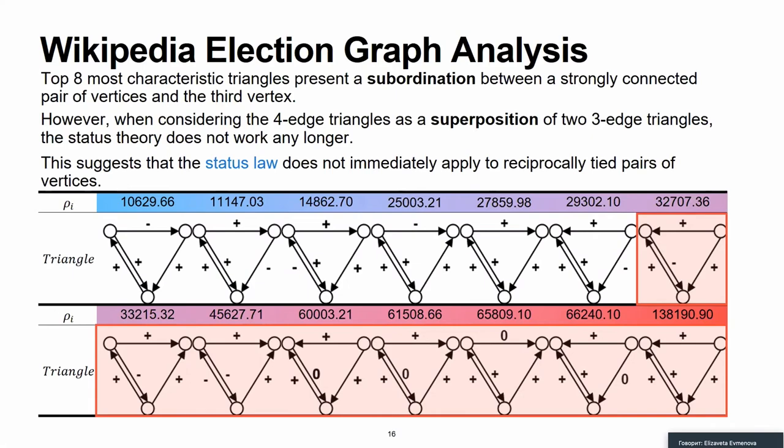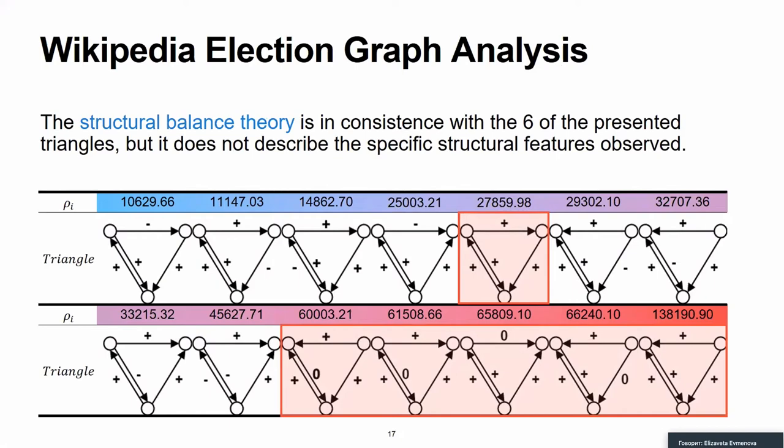An alternative approach to analyze oriented subgraphs consists in considering such triangles as a superposition of several elementary triangles. Even fewer triangles satisfy the status law when analyzed from this perspective. Using this principle of superposition in analyzing triangles with four edges, each triangle can be uniquely represented as a superposition of two elementary triangles. On the list of triangles, six triangles, of which five are the most characteristic ones, agree with the structural balance rule, while the remaining eight violate this rule.